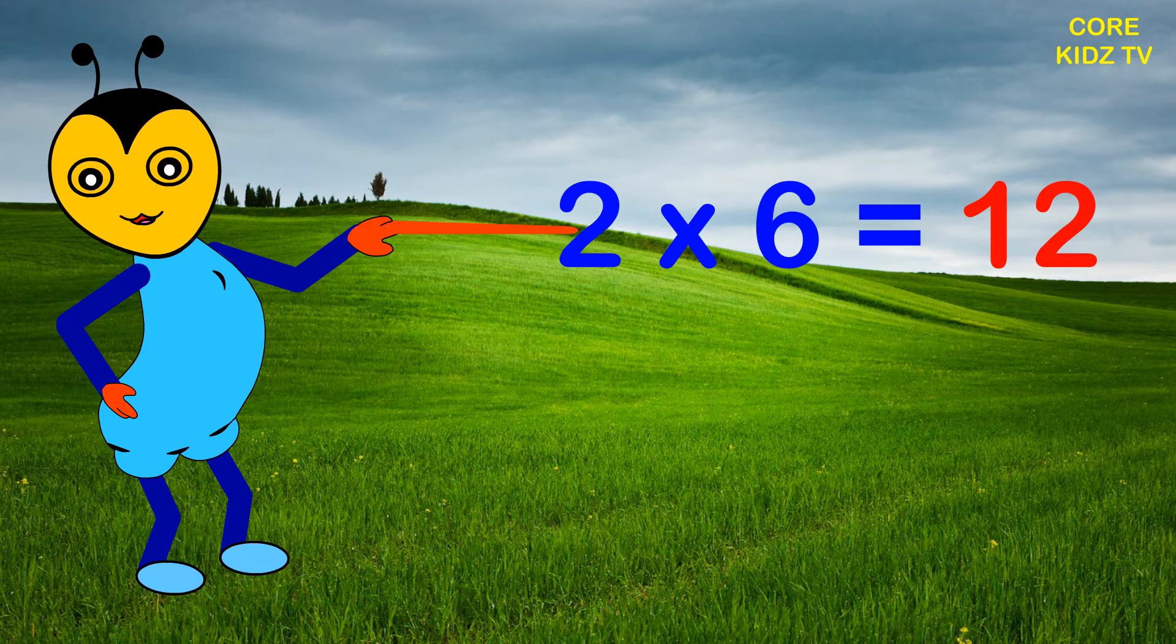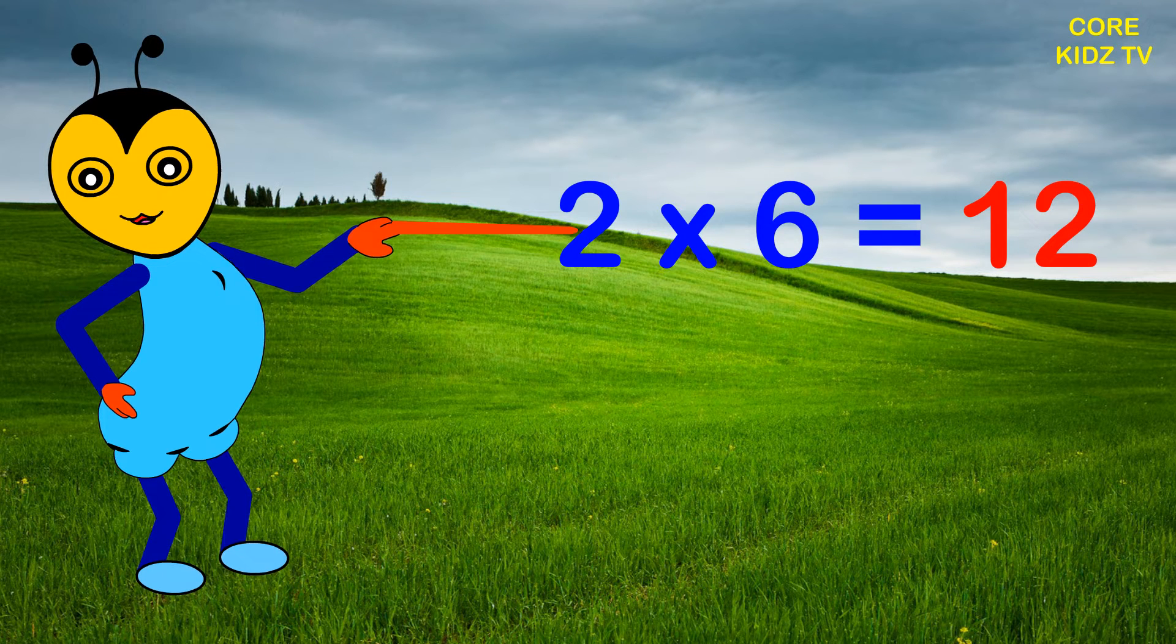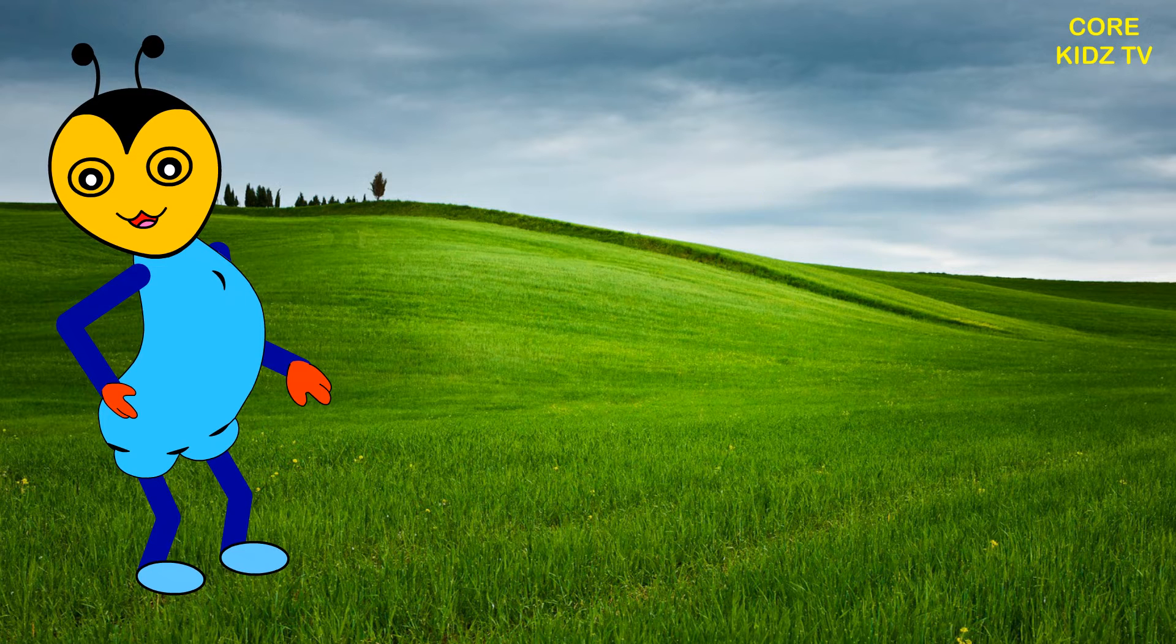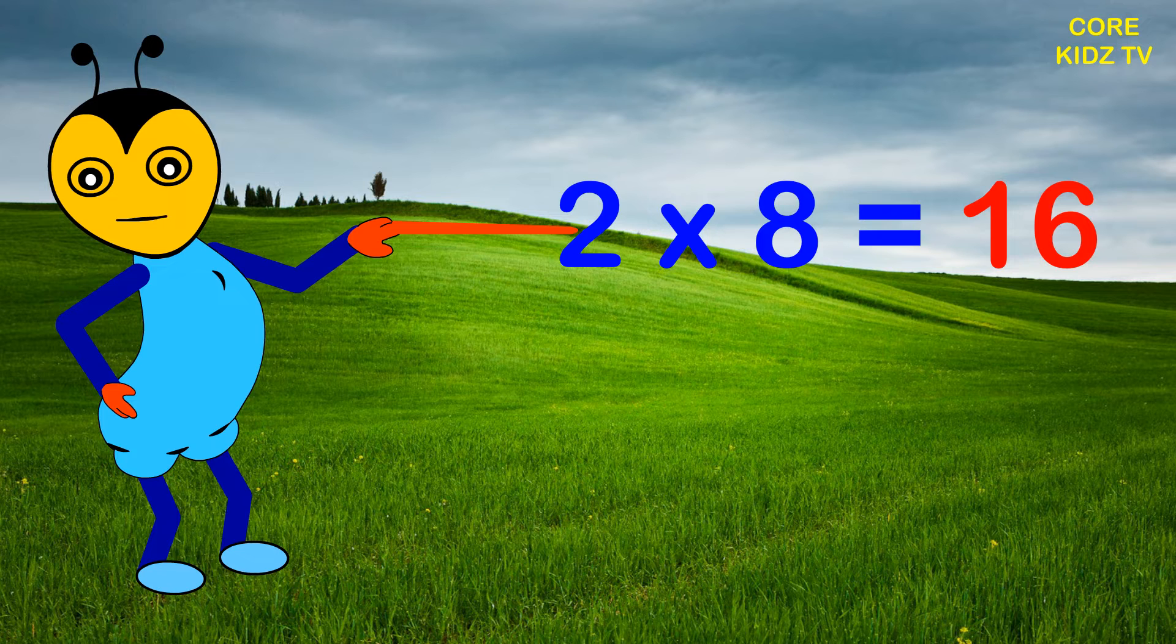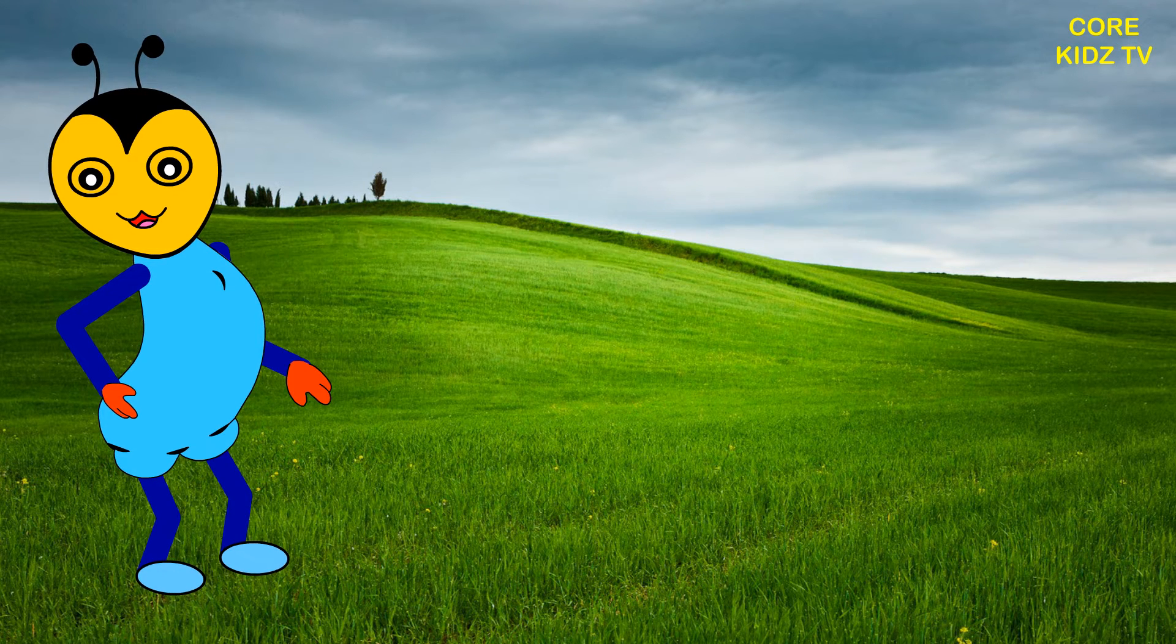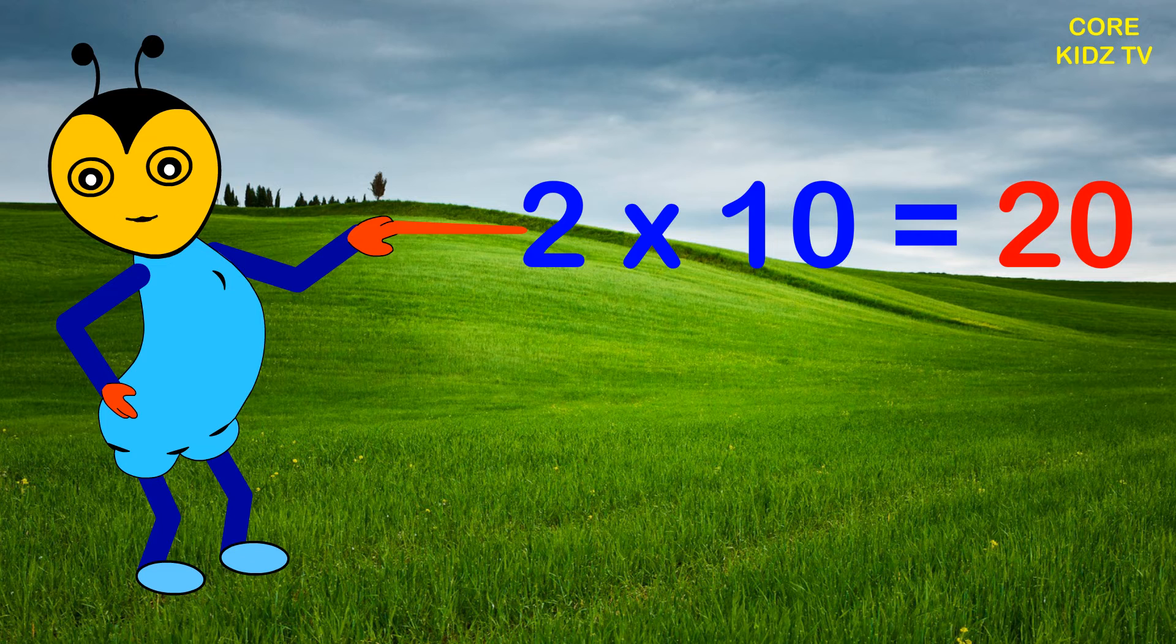Two six are twelve, two sevens are fourteen, two eights are sixteen, two nines are eighteen, two tens are twenty.